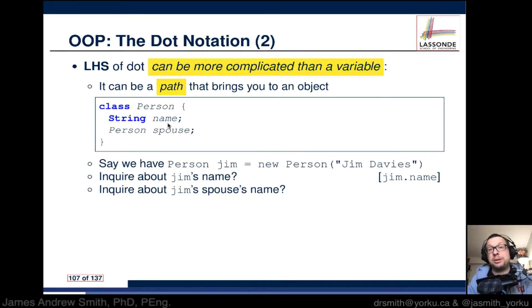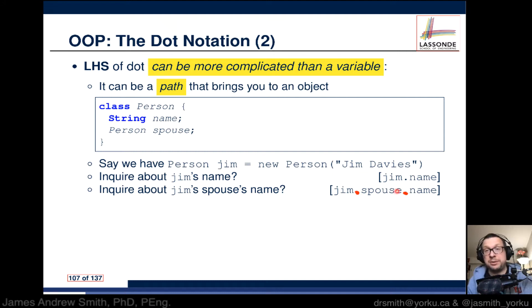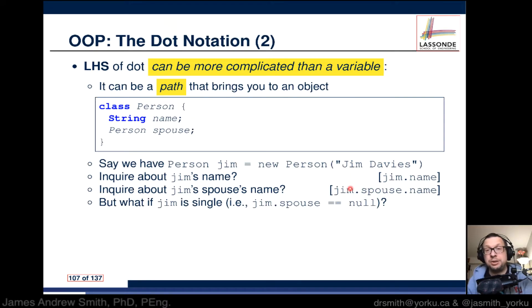Now, could we do an inquiry about Jim's spouse's name? There's an object associated with Jim — Jim's spouse. So what would we do? We say Jim, then we want the attribute spouse. Spouse is also a Person, so we can ask for Jim's spouse's name as well: Jim.spouse.name. Name is associated with spouse, and spouse is associated with the object Jim.